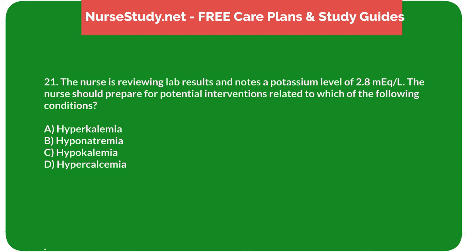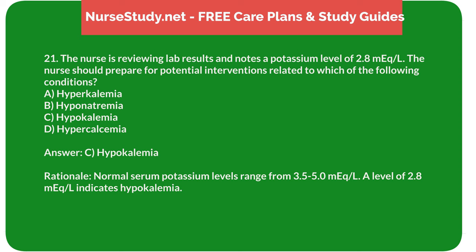Question 21: The nurse is reviewing lab results and notes a potassium level of 2.8 mEq/L. The nurse should prepare for potential interventions related to which of the following conditions? A. Hyperkalemia. B. Hyponatremia. C. Hypokalemia. D. Hypercalcemia. Answer: C. Hypokalemia. Rationale: Normal serum potassium levels range from 3.5 to 5.0 mEq/L. A level of 2.8 mEq/L indicates hypokalemia.